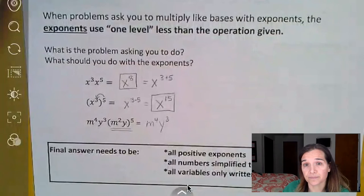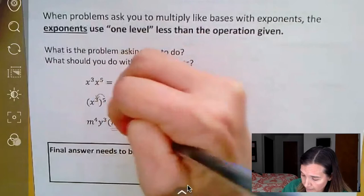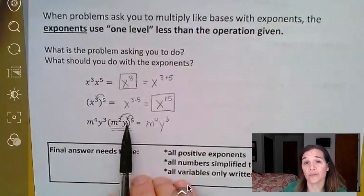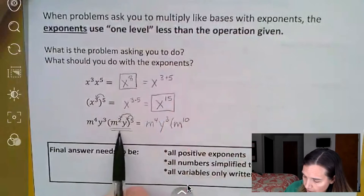m to the fourth power, y to the third power. And then when it comes to taking this part to the fifth power, I'm going to multiply the exponents together. Notice that the y has no exponent there, which means it's a one. So I'm going to end up with m to the 10th power, because two times five is 10.